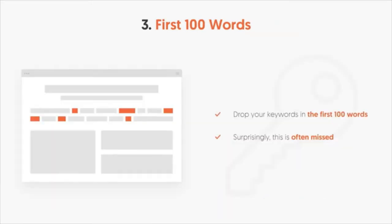The next thing to look at is the first 100 words on your webpage. Google crawls your first 100 words heavily because typically what you talk about in your first paragraph or two is what the article is about. You want to make sure you're dropping in your keywords naturally within those first 100 words — don't force them or stuff them. Use Ubersuggest to find which keywords are more popular than others.